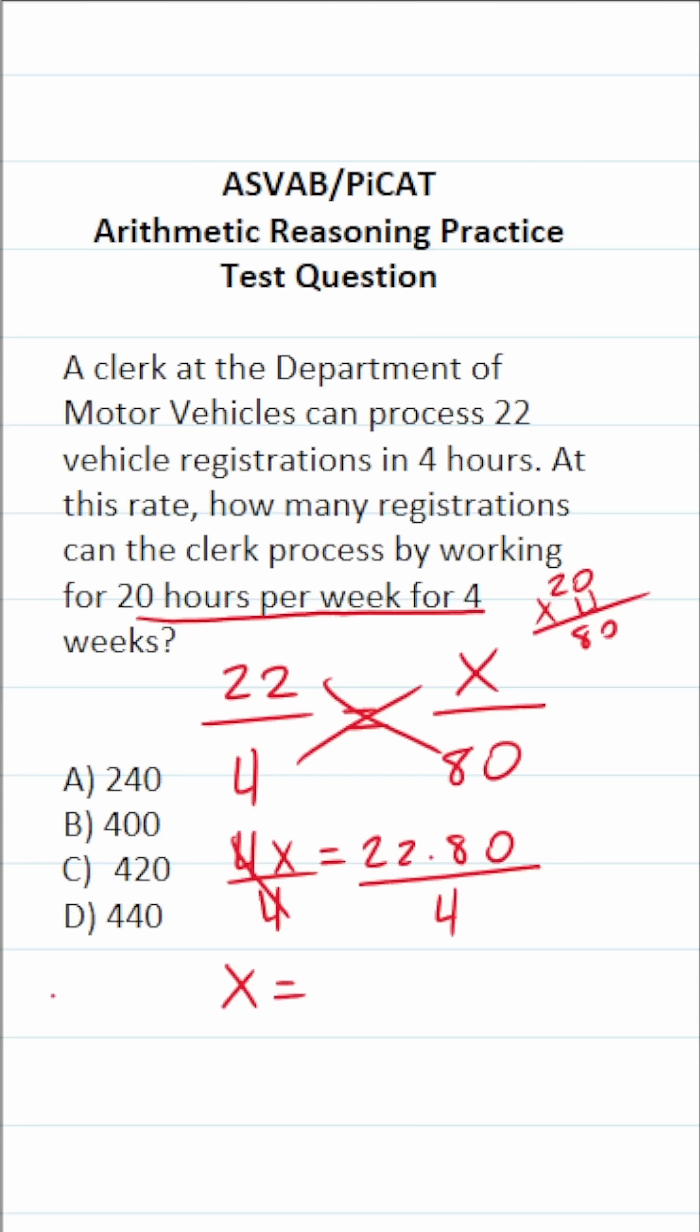Four is the same thing as one times four. One times four is four. So I can break this apart to be 22 over one times 80 over four.